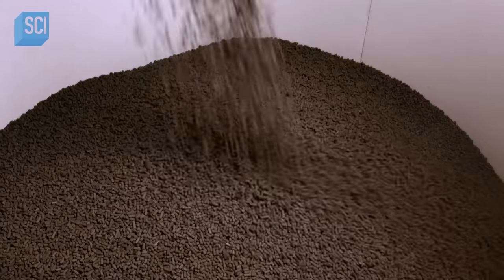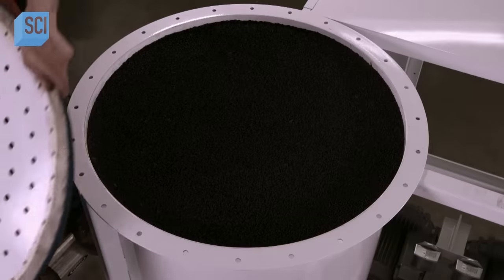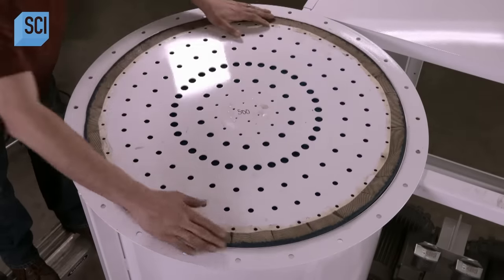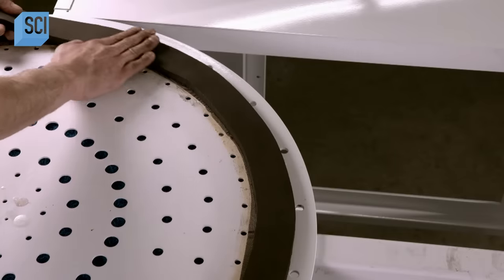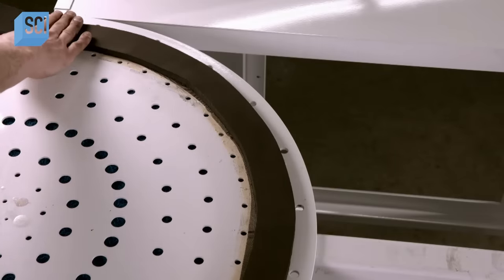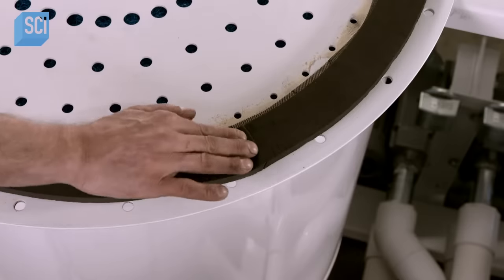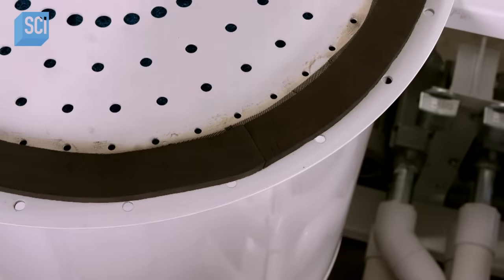Once each vessel is filled to the top, workers lay in a steel baffle. Its holes evenly distribute air passing through the vessel. They place a foam rubber gasket around the perimeter and bolt on the lid tightly.